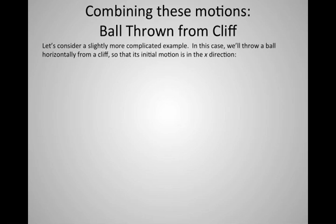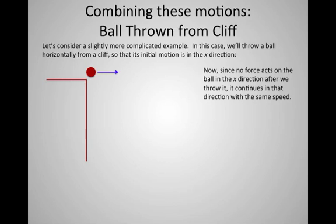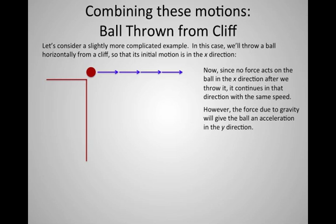Well, let's combine these and talk about a ball that we launch off the edge of a cliff. We'll talk about something where we launch the ball horizontally so its initial motion is in the x direction. Essentially, we're giving it a boot off to the side. Now, in this case, gravity is going to be pulling this thing downward, but there's no force acting on the ball in the x direction. Once we throw it, it continues to move in the x direction with constant speed. So it just continues to march along.